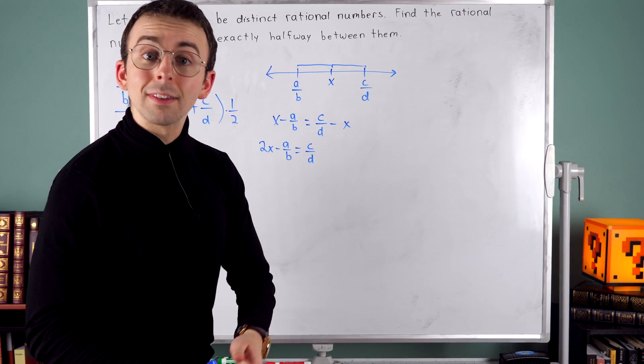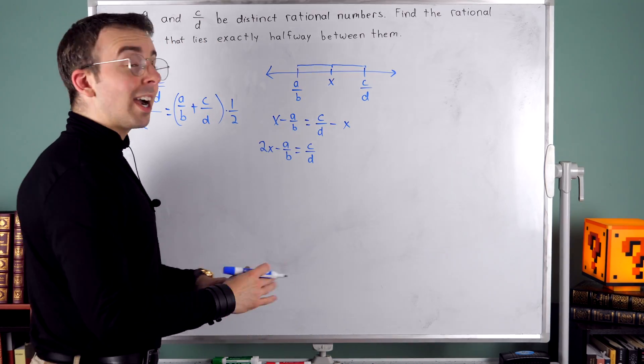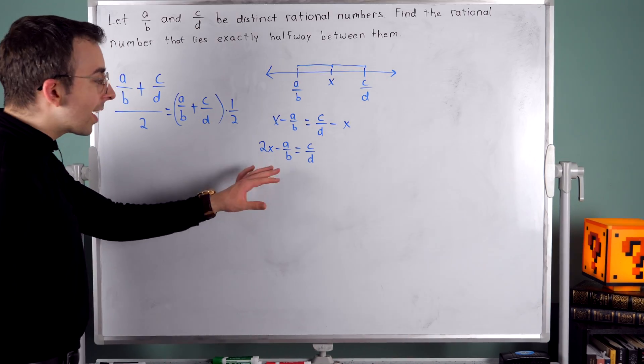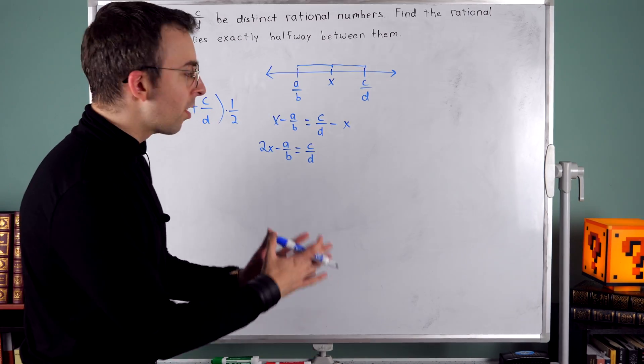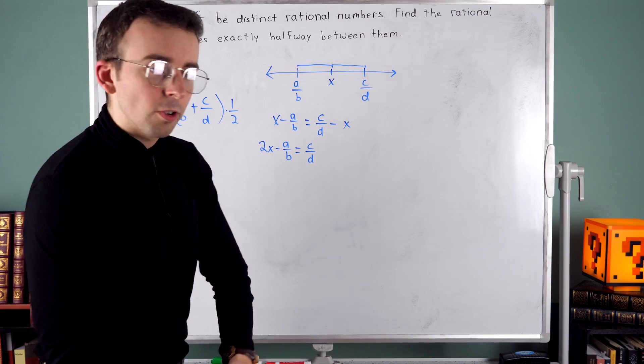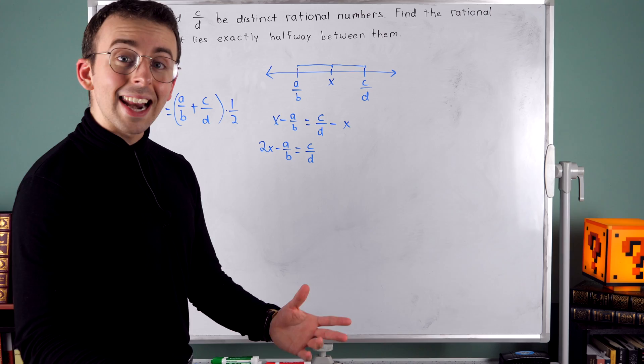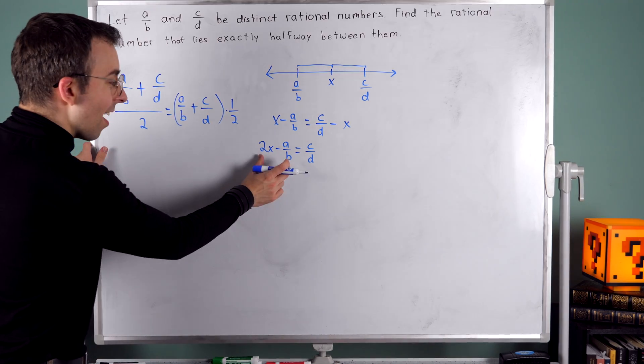I had a minus x, but since I added x, that minus x isn't there anymore. All right, now I want to collect all my constant terms on the right side of the equation. I've got this minus A over B on the left. So to get rid of it, I'm going to add A over B to both sides.